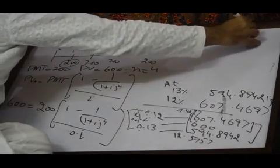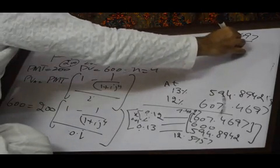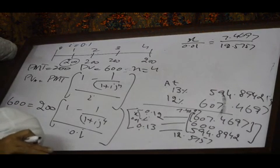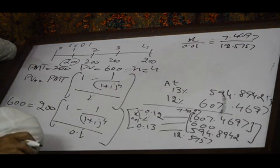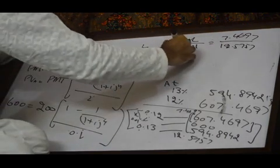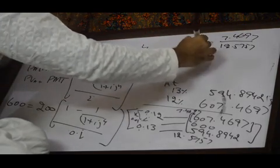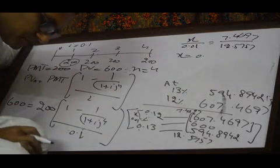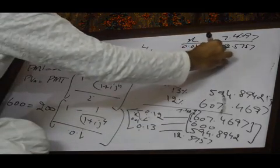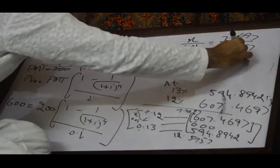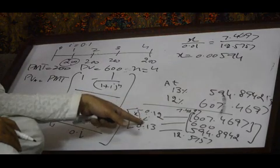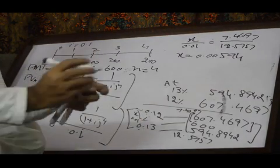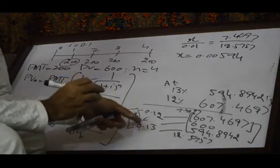Setting up the interpolation equation for x, the value of x comes out to 0.00594. X was the difference between 0.12 and i. Since i is greater than 0.12, we add x to 0.12, giving the interest rate i approximately equal to 0.12594, which is between 12% and 13%.